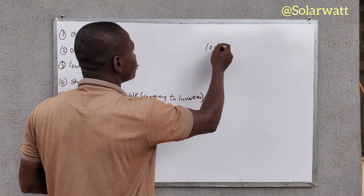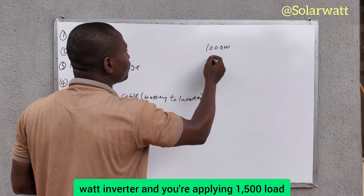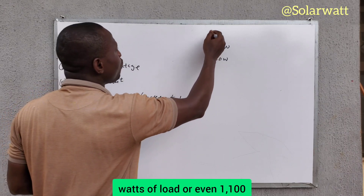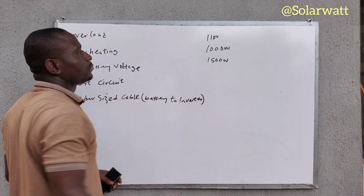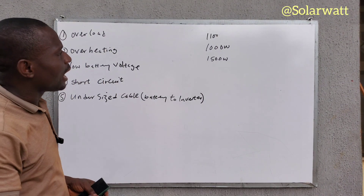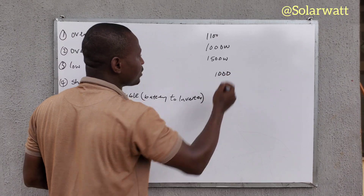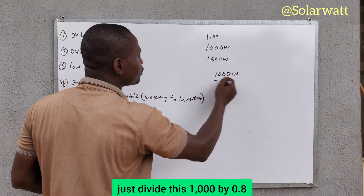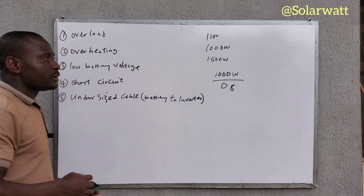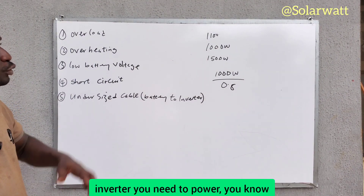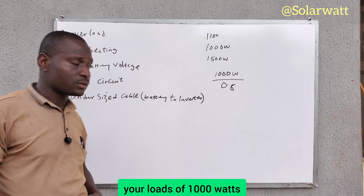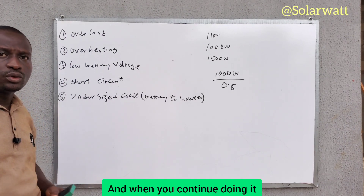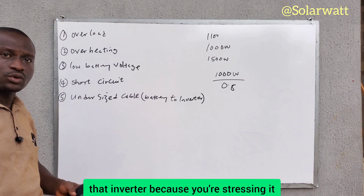For example, if you have a 1000-watt inverter and you are applying 1500 watts of load, or even 1100 watts, that inverter will be shutting down. Now, if you have a load of 1000 watts and you want to know the appropriate size of inverter to power it, just divide 1000 by 0.8 — whatever value you get is the size of inverter you need. Overloading an inverter can destroy its internal circuits because you are stressing it.